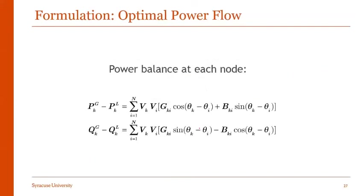Next, we need to balance power at each node — essentially, we have to solve the power flow equations. At each node K, we have power generated and power demand (load). This constraint states that generation minus load equals the amount of power flowing into that bus for active power. We have a similar expression for reactive power: generated reactive power at bus K minus the reactive load at bus K equals the reactive power flow at bus K. This is an equality constraint.